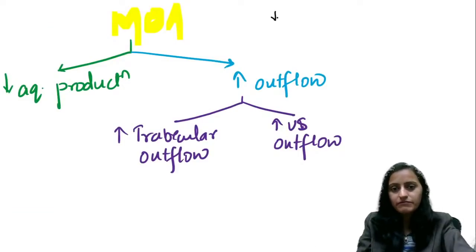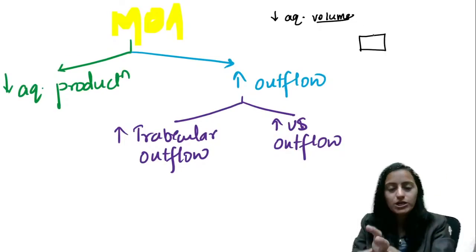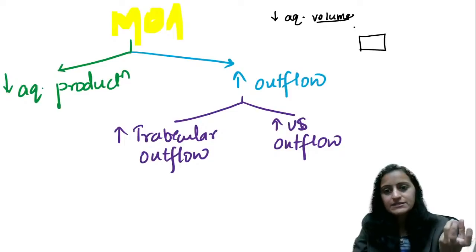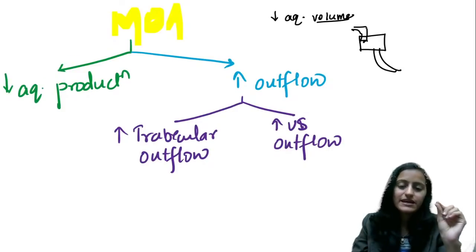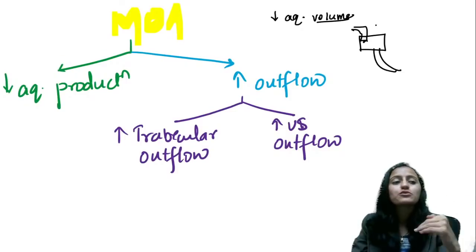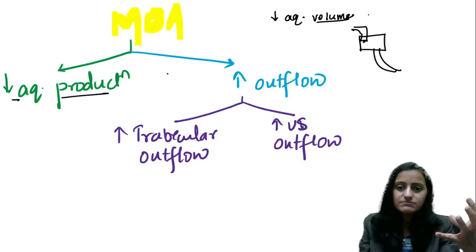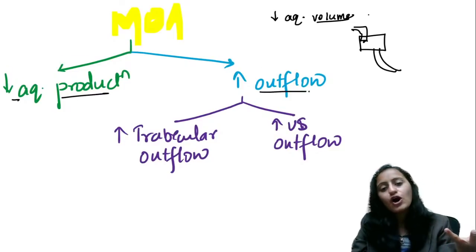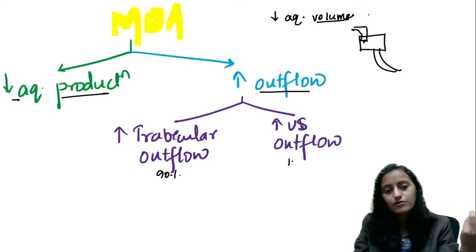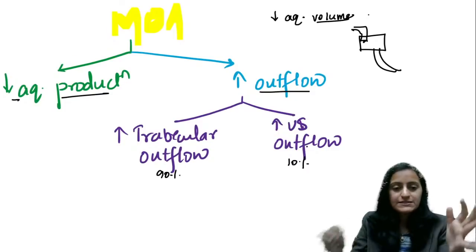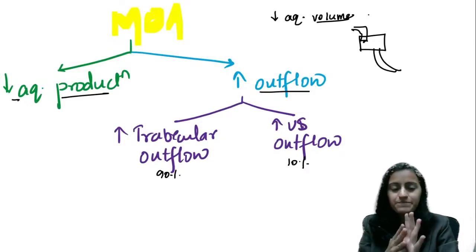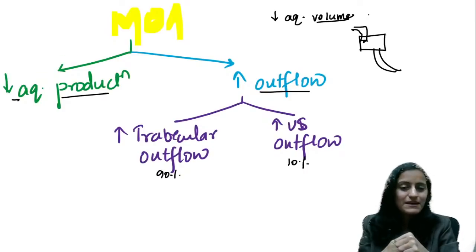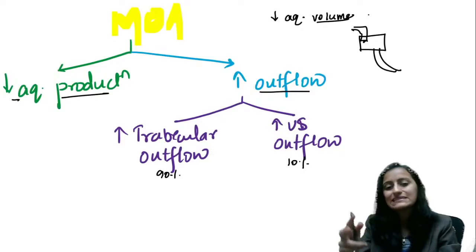In glaucoma we want to decrease the aqueous volume. Think of it like a tank with water — you either stop the inlet or increase the drainage. Similarly, to decrease aqueous volume, you can either decrease the production or increase the outflow. Outflow can be trabecular or uveoscleral. We need to know which drug decreases production and which increases outflow.